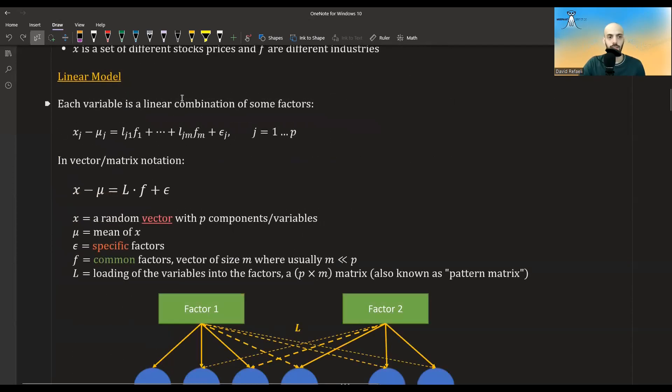So in factor analysis, the model that we assume is a linear model. So we have a set of variables X that have P variables in them. And each of these variables, we say that it's actually a linear combination of M factors, usually where M is much smaller than P, plus an intercept term, which will be just the mean of that variable. And plus some other influence, which could be attributed to the specific variable or to some noise, etc. So this is how we would write it in algebraic manner.